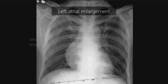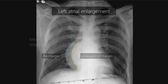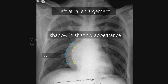As the left atrium enlarges, it comes into contact with the right lung. Thus, the enlarged left atrial margin becomes visible and is superimposed on the right atrial shadow, forming a shadow-in-shadow appearance, which is called the double density sign.